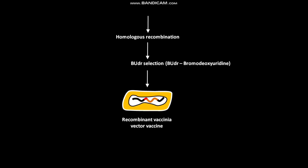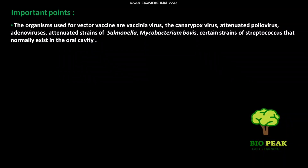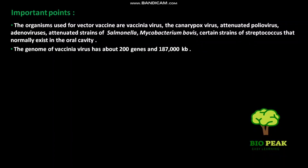The recombinant vaccinia vector vaccine kills TK-plus cells. Some important points: the organisms used for vector vaccines are vaccinia virus, canary pox virus, attenuated polio virus, adenoviruses, attenuated strains of Salmonella, the BCG strains of Mycobacterium bovis, and certain strains of Streptococcus that normally exist in the oral cavity. The genome of vaccinia virus has about 200 genes and 1,087,000 KB.